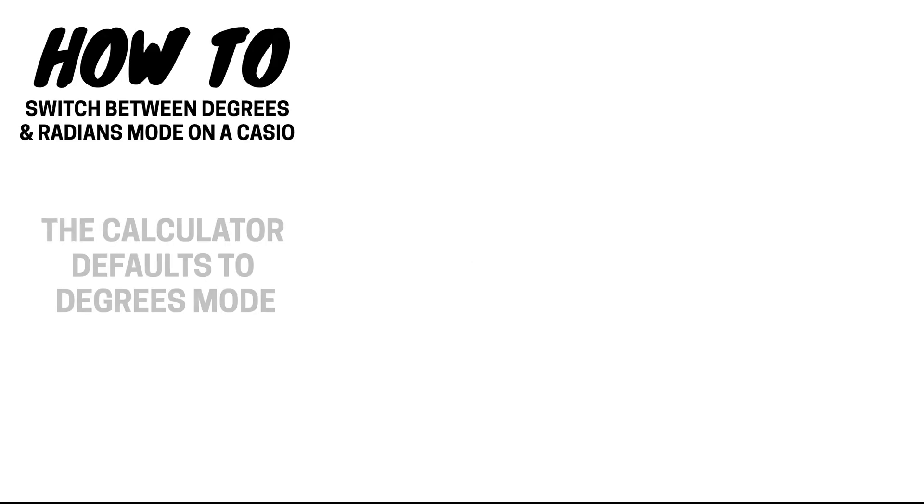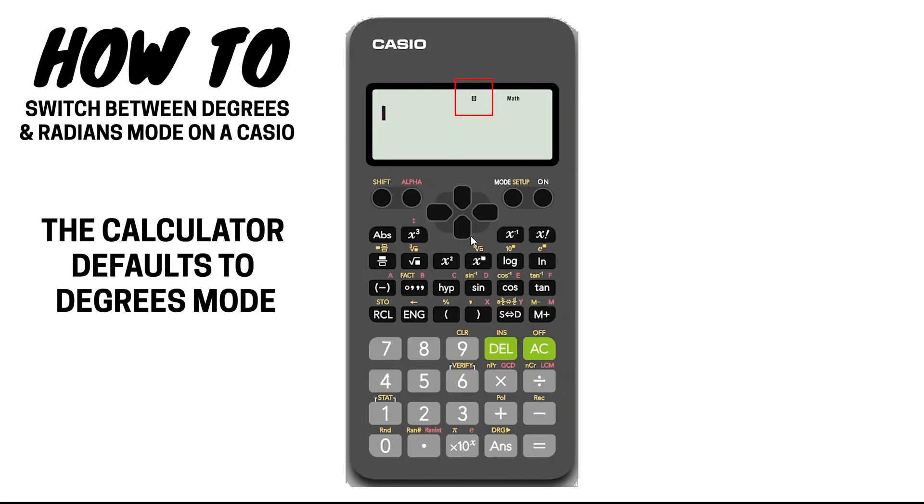Number ten: the calculator defaults to degrees mode. You should see a small letter D at the top of your screen. Always check this before going into an exam. It could have a big impact on your answers if you are doing a trig exam and your calculator is in radians mode. Trust me, this has happened to me.